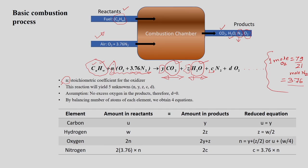Since we need to find N, the term N×3.76 is represented as C — that many moles of nitrogen come out from the combustion chamber. Additionally, D represents the moles of excess oxygen coming out with the product gas.